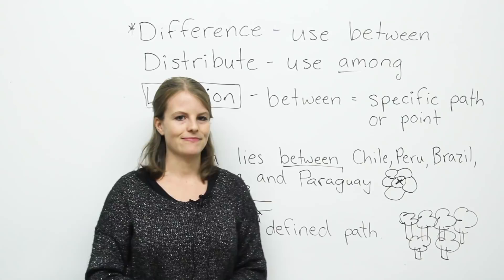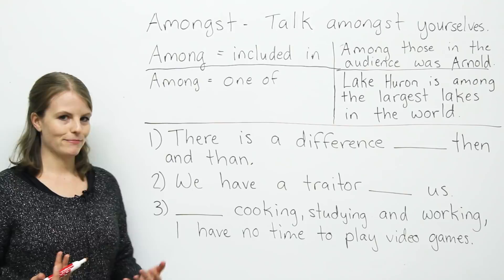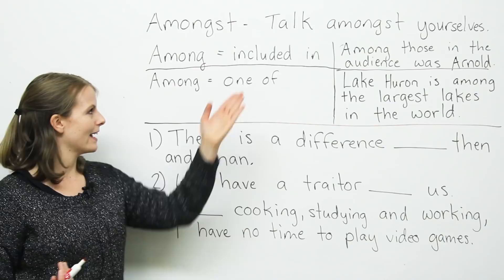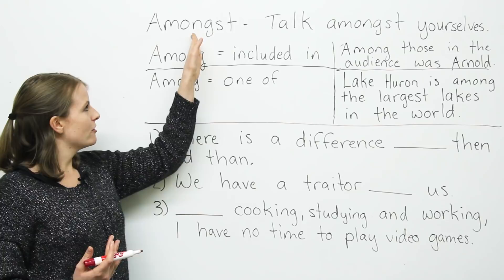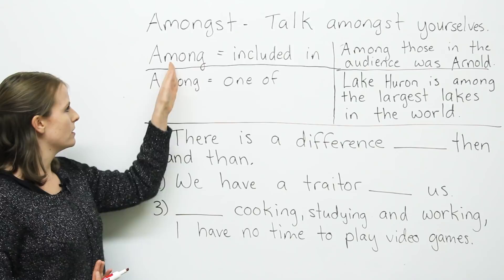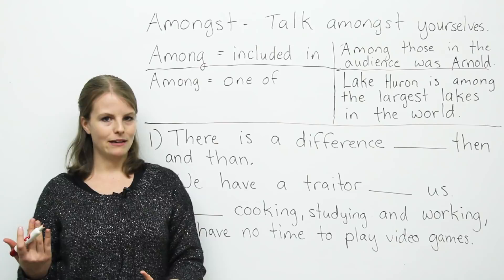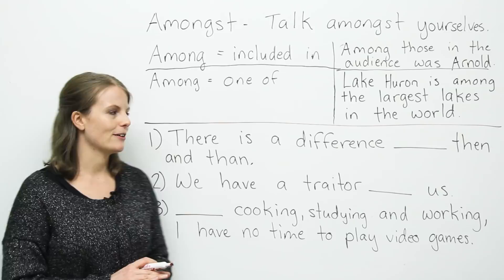Now let's learn about the word amongst. For example, 'Talk amongst yourselves.' In Canada and Britain, you'll sometimes hear people say amongst. But in the United States, people don't usually use amongst — they find it old-fashioned and archaic — so they would use among instead. This is a difference between American English and British English. Amongst is used just like among.